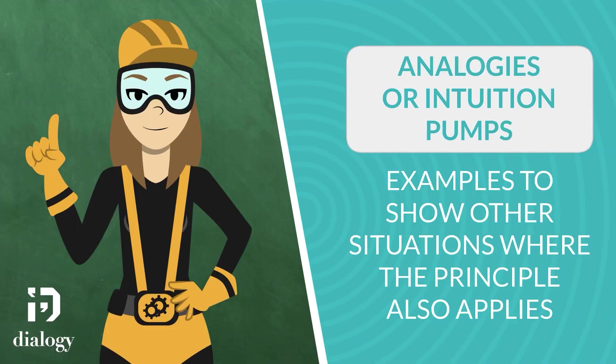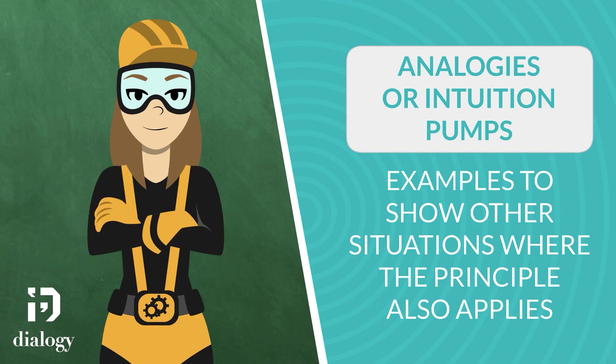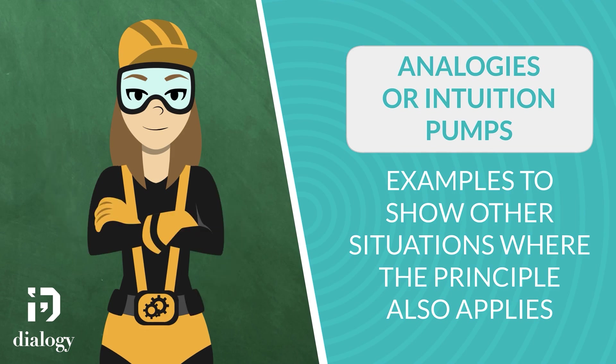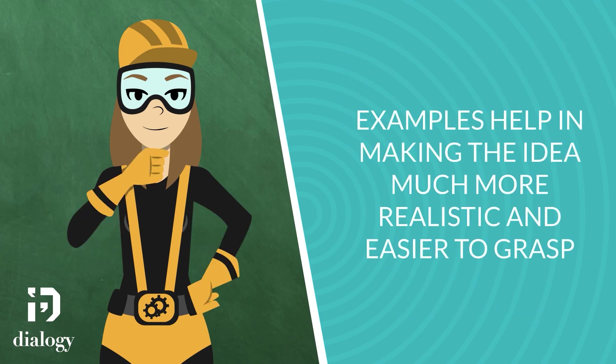These examples are called analogies or intuition pumps. For instance, if the topic is on whether makeup should be banned, the con team will talk about how people have the right to self-expression. The analogy or intuition pump here would be to say that people also have the right to use fashion to express themselves, and that banning makeup would be the same as forcing everyone to look the same. Relating a principled argument to another idea helps make the idea much more realistic and easier to grasp.